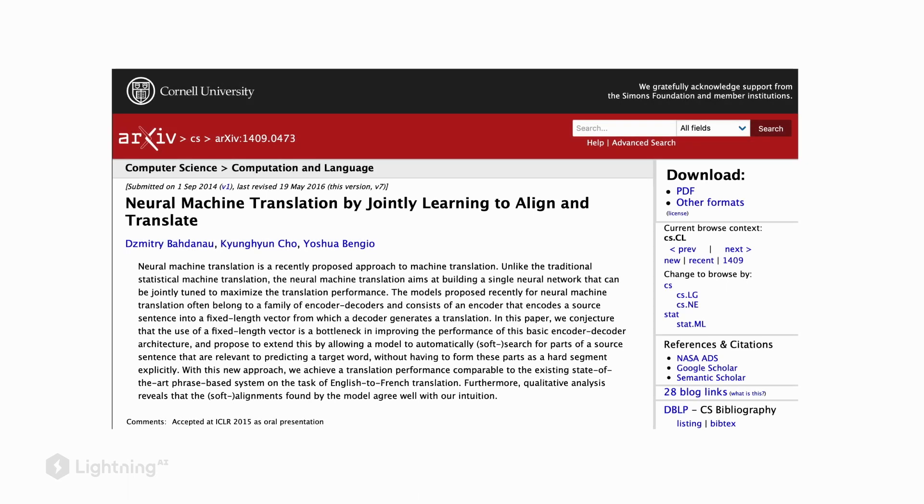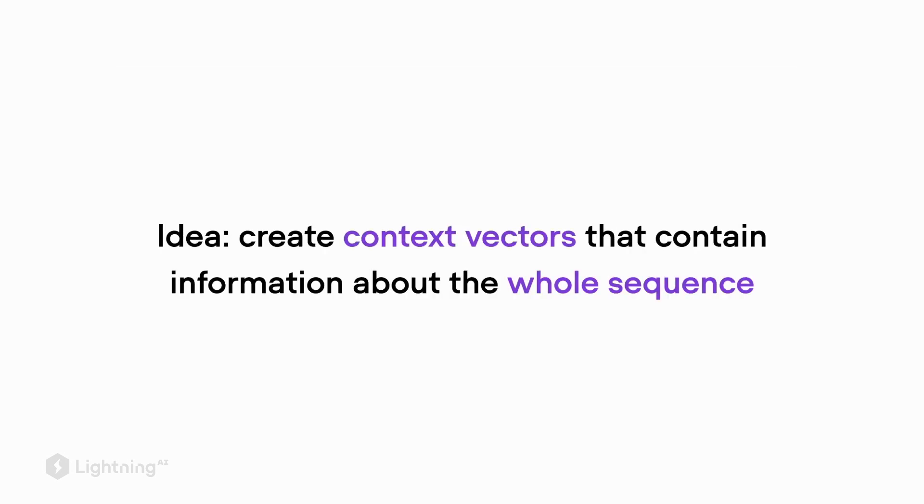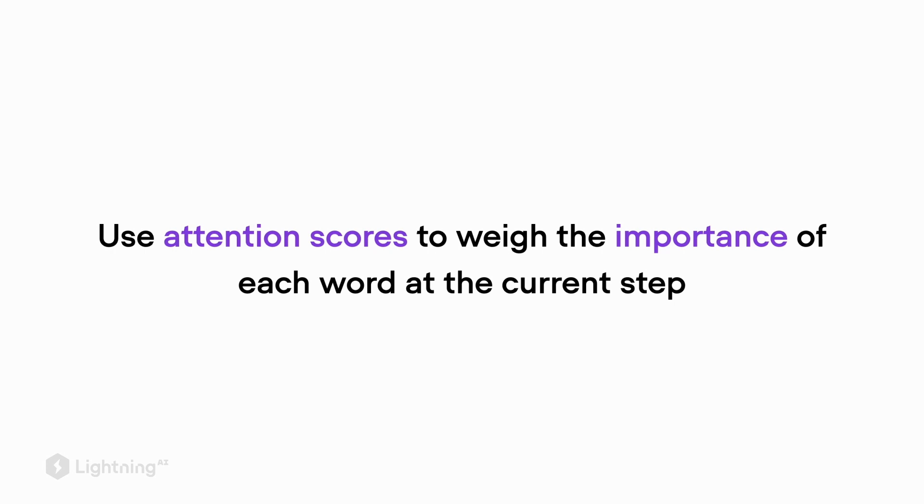The attention mechanism for recurrent neural networks was first proposed in 2014, and we are going to briefly discuss how it works. The key idea is to create context vectors that contain information about the whole input sequence, and then use these attention scores to weigh the importance of each word at each current output step.